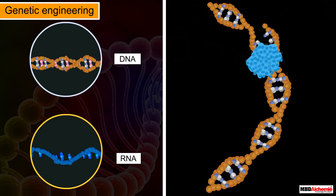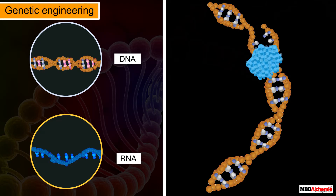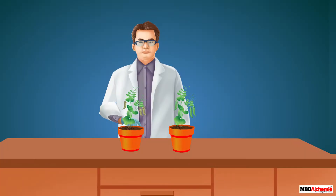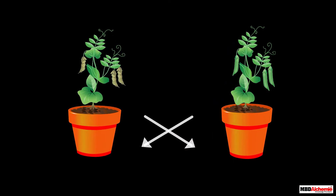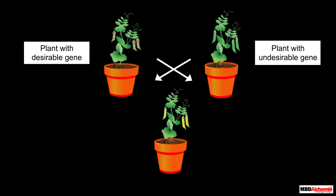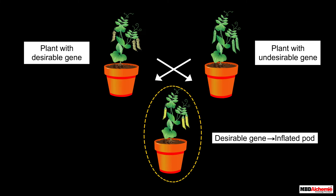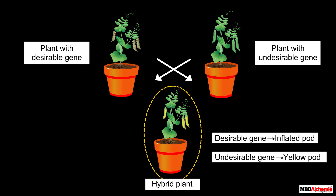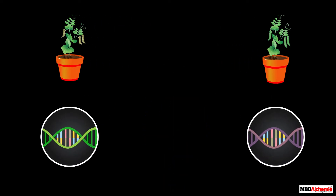To understand it better, let us look at the conceptual development of genetic engineering through an example. Roshan is a scientist who works on plant hybridization. Every time he crosses two plants, along with the desirable genes he selects, some undesirable genes are also transferred from the parent plants to the hybrid plant. His friend suggested he use genetic engineering to overcome this problem.